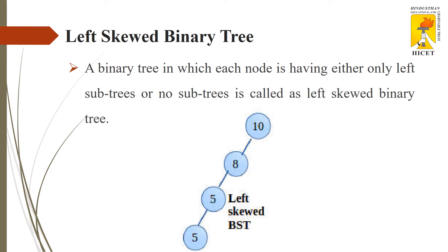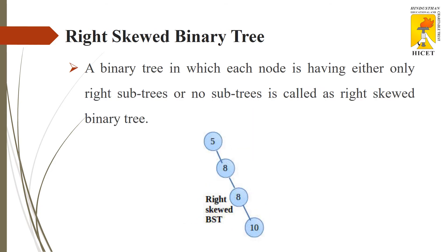The next type of binary tree is left skewed binary tree. If a binary tree grows along the left side, then it is called a left skewed binary tree, as you can see in this example. The next type is right skewed binary tree. If the tree grows along the right side, then it is called a right skewed binary tree.